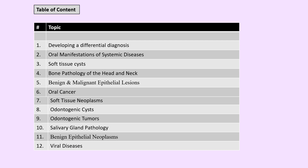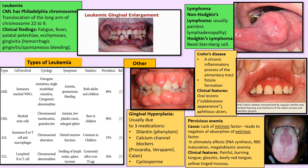Here we see leukemia and its different types: AML, CML, ALL, and CLL. AML is the most deadly form of leukemia. ALL is the childhood leukemia with the best prognosis. In CML we have the Philadelphia chromosome, and CLL is the old-age leukemia.